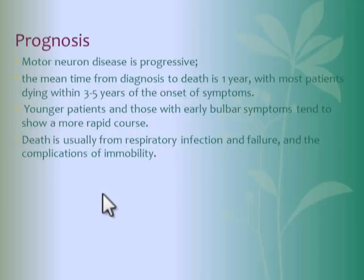Regarding prognosis: motor neuron disease is an absolutely progressive condition. The mean time from diagnosis to death is about one year. Most patients die within three to five years of the onset of symptoms. Younger patients and those with early bulbar symptoms tend to show a more rapid course. Death is usually from respiratory infection, respiratory failure, or complications of immobility.